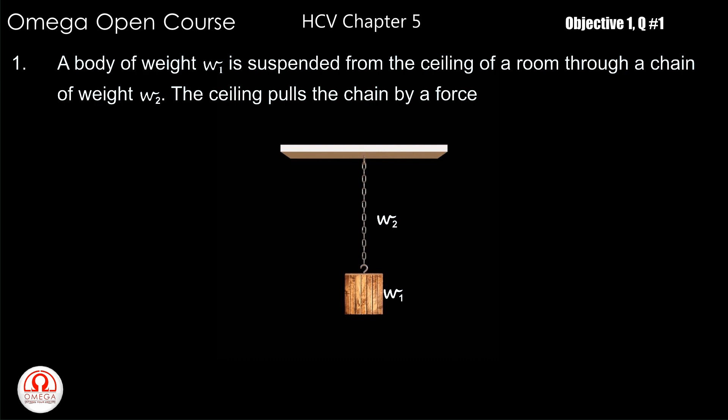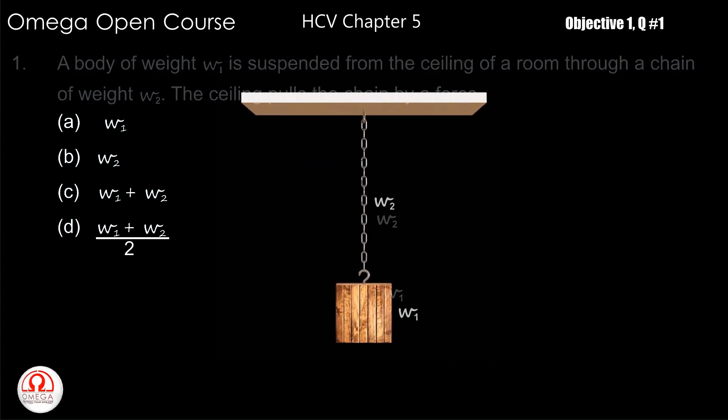A body of weight w1 is suspended from the ceiling of a room through a chain of weight w2. The ceiling pulls the chain by a force: (a) w1, (b) w2, (c) w1 plus w2, (d) w1 plus w2 by 2.